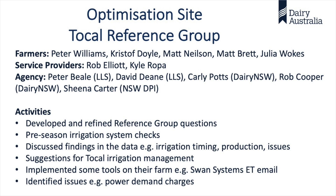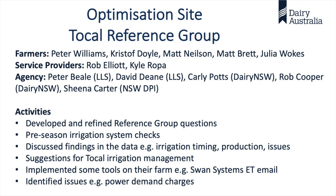This is what has happened. We've developed and refined questions that we want to investigate. We've done a pre-season check — Rob Elliott did that for the system this season. We have discussed findings on irrigation timing, production, and made suggestions to Matt. Some of the reference group have implemented these tools on their farm, in particular the Swan Systems email, which I'll talk about shortly. We've also identified some key issues that unfortunately we haven't yet been able to address.